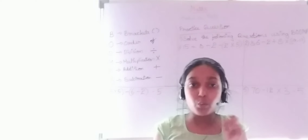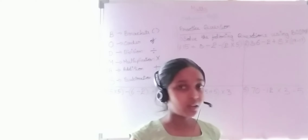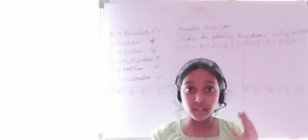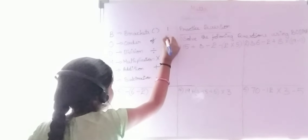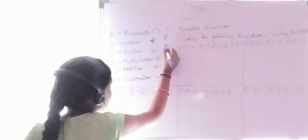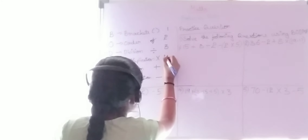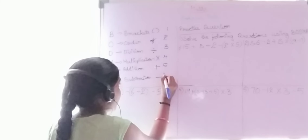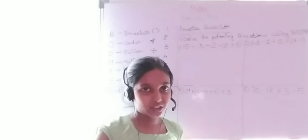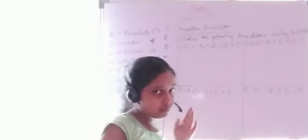When performing arithmetic operations using the BODMAS rule, we give first priority to Brackets, second priority to Order, third priority to Division, fourth priority to Multiplication, fifth priority to Addition, and sixth priority to Subtraction. Now let us solve some practice problems.